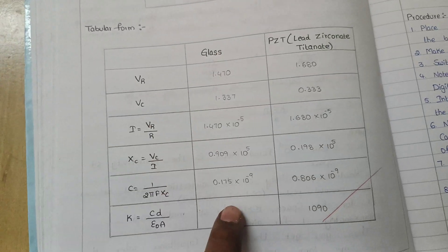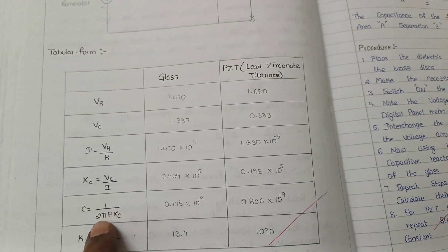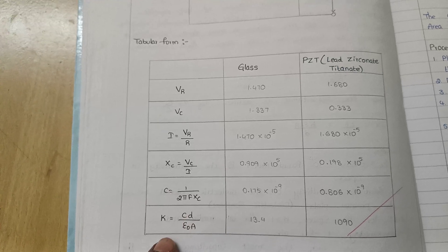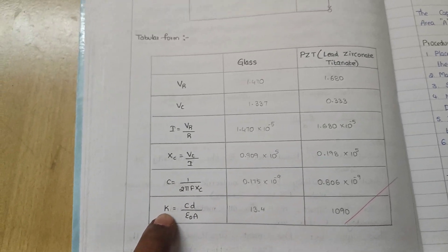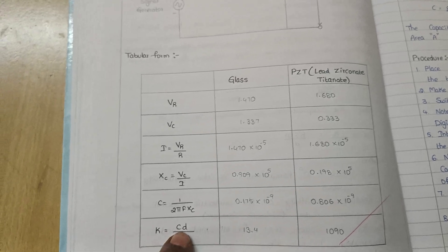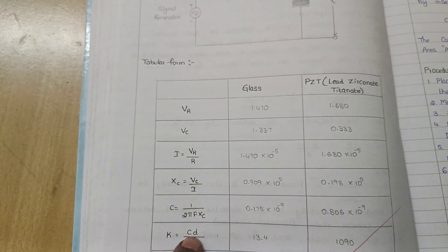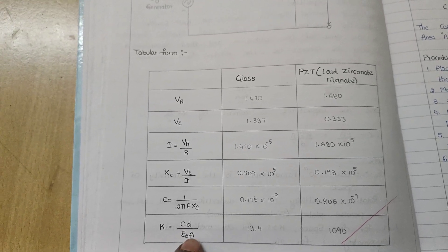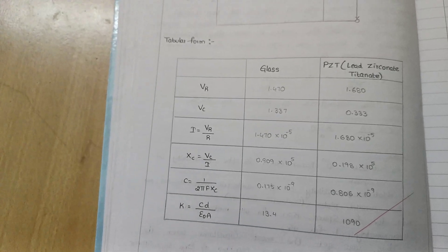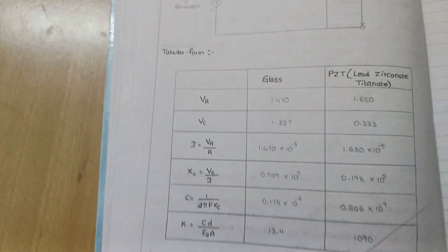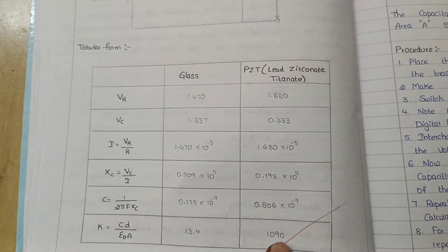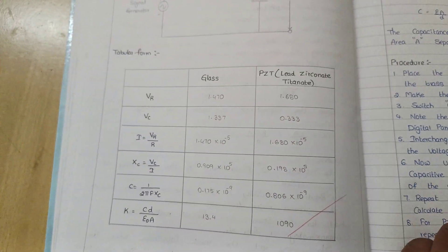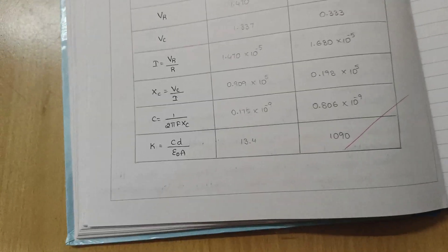We have to find out the capacitance of the glass and also of the PJT using the formula: C = 1 / (2π × frequency × XC). Finally, we calculate the dielectric constant: K = (capacitance × distance between the parallel plates) / (permittivity of free space × area of the circle). For glass, we consider the big circle, and for PJT, we consider the small circle.